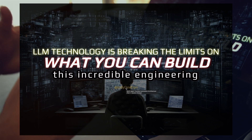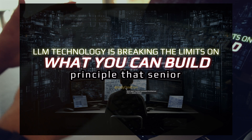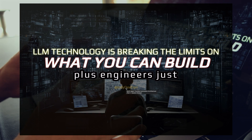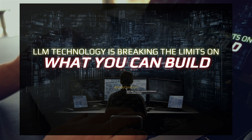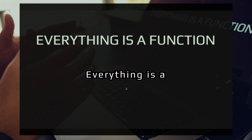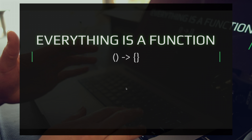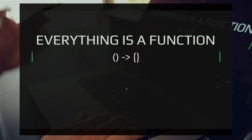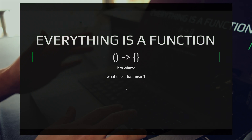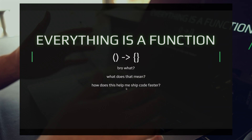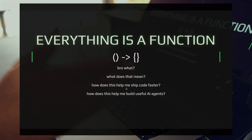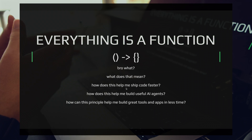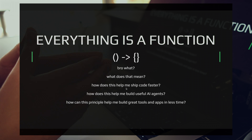So what is this incredible engineering principle that senior-plus engineers just kind of know by heart? It's simple: everything is a function. What does that mean? What are the implications? How does this help you ship code faster, build useful AI agents, and build great apps and tools in less time?